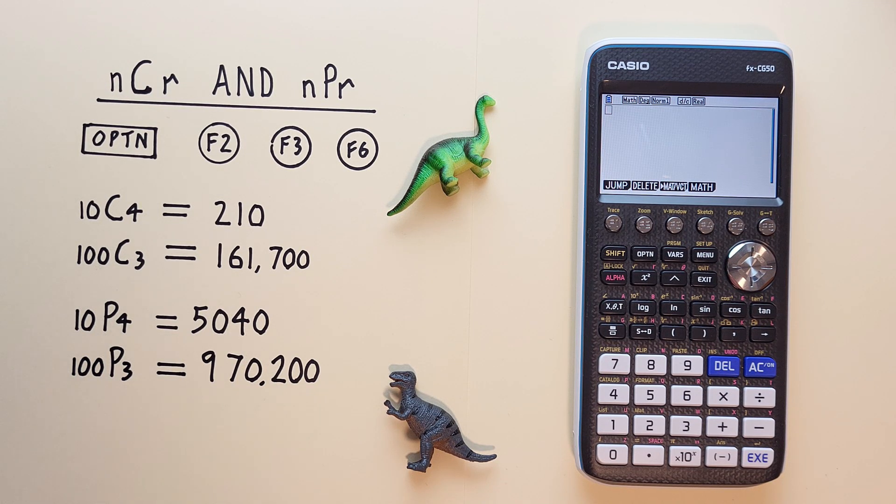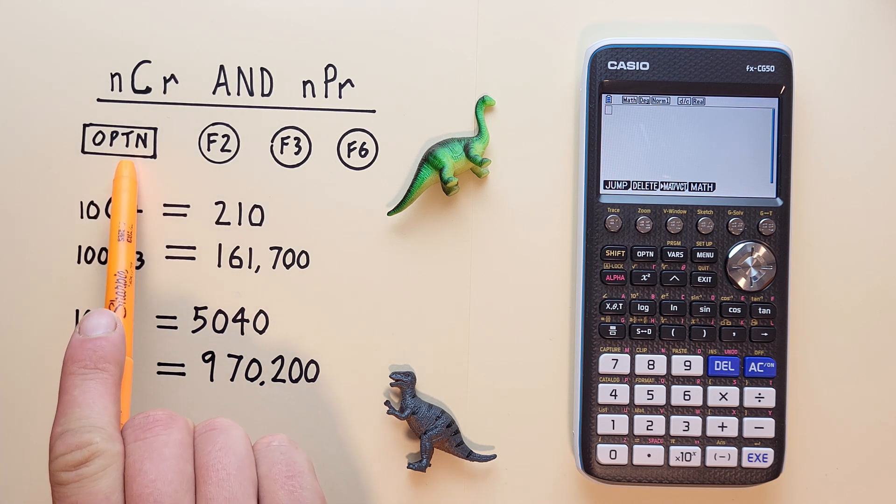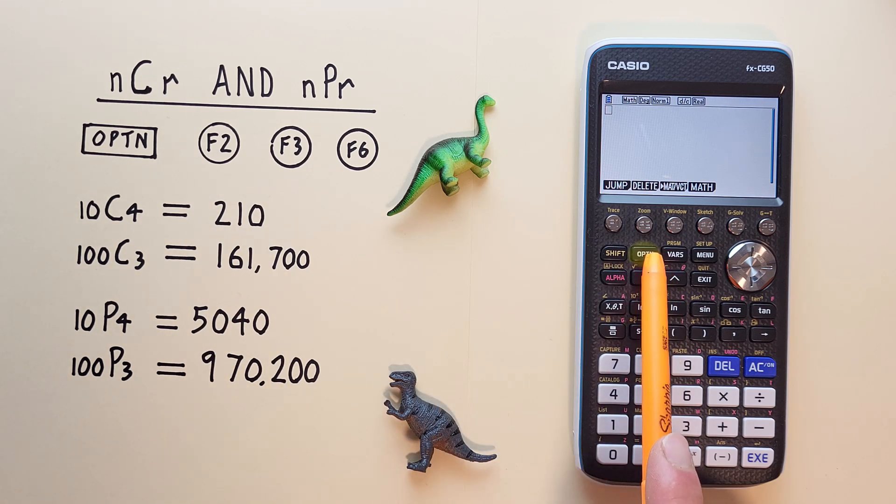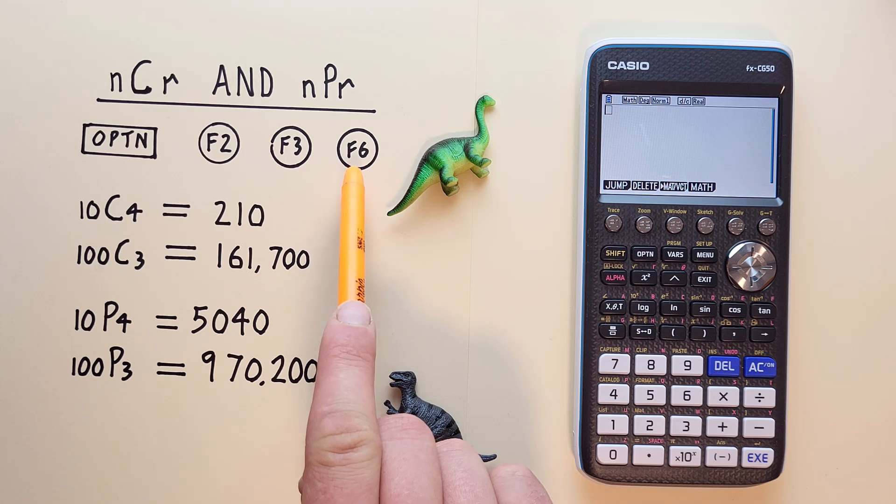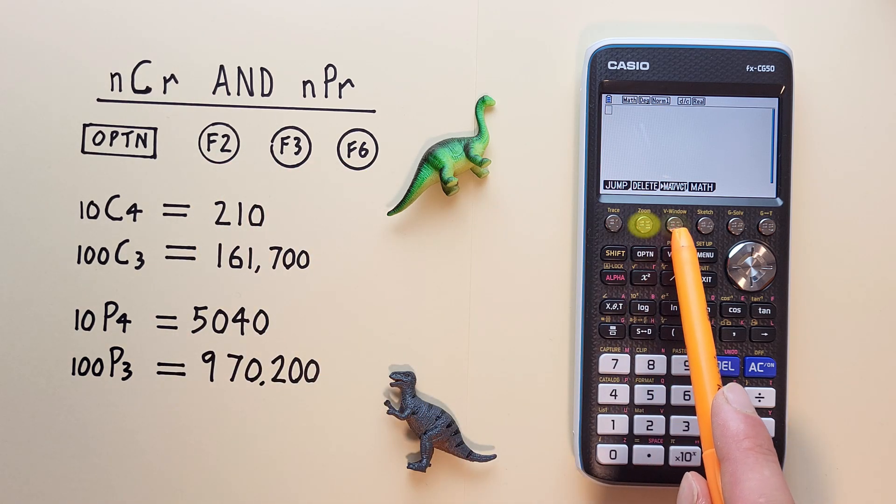To do this, we'll use the Option key that looks like this, located here, and the F2, F3, and F6 keys that look like this, located here, here, and here.